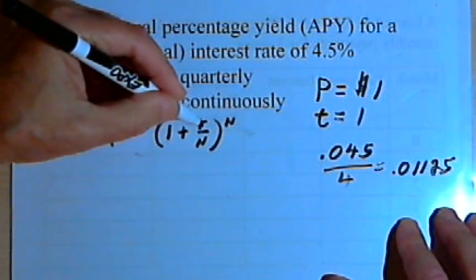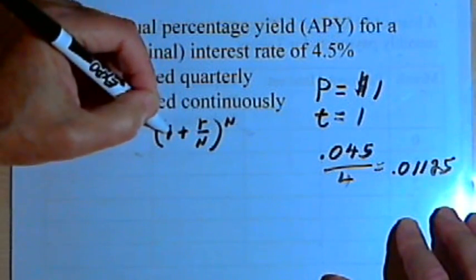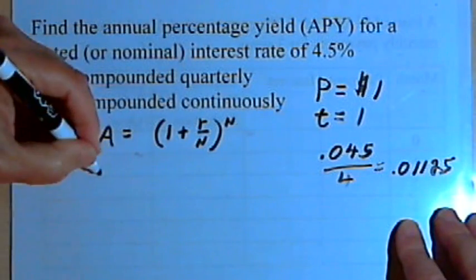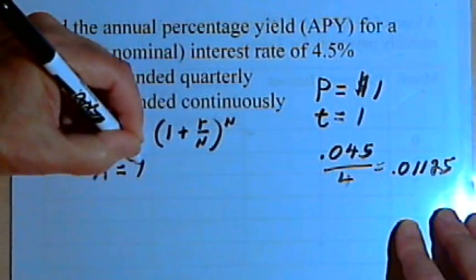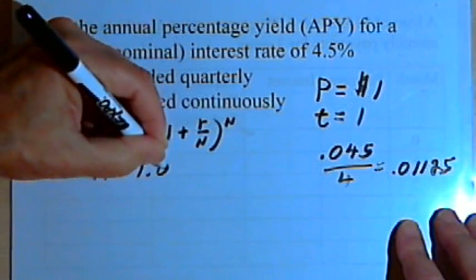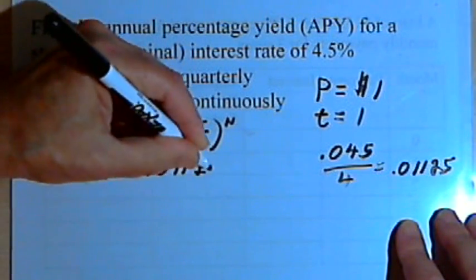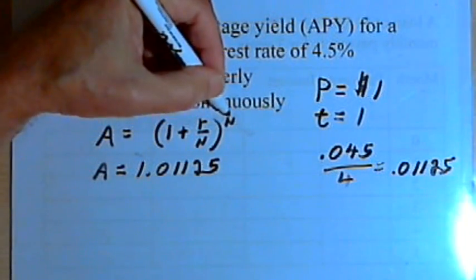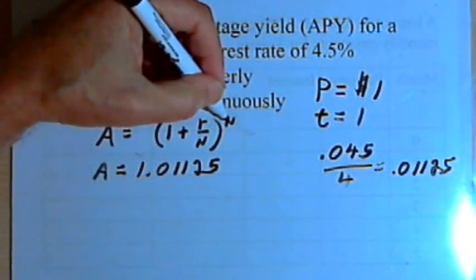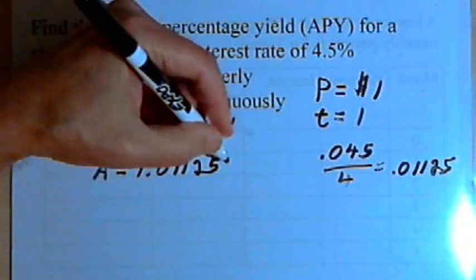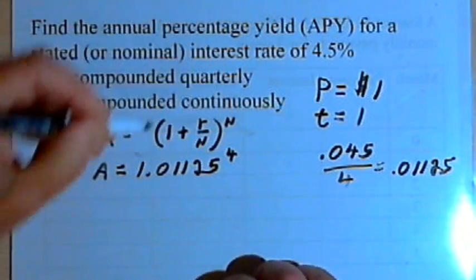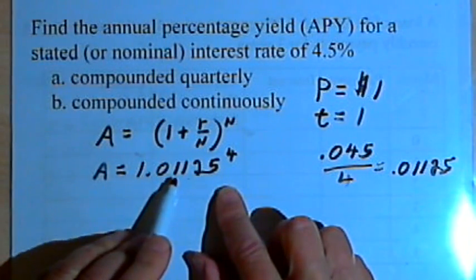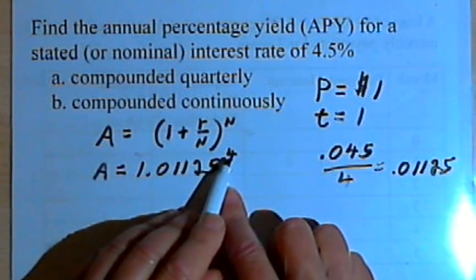That means that 1 plus r over n is the same as 1 plus 0.01125, so we can just say A equals 1.01125. And we want to raise that to the n power. Well, n is 4 because it's quarterly. So now we've got A equals 1.01125 raised to the fourth power.